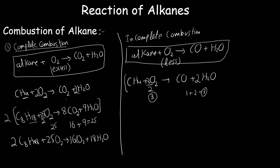To get whole number answers, multiply the entire reaction by two. You get two moles of methane reacting with three moles of oxygen — the 3/2 times two, the two cancels — giving two moles of CO and four moles of water. These are the two types of combustion for alkanes: complete and incomplete combustion.